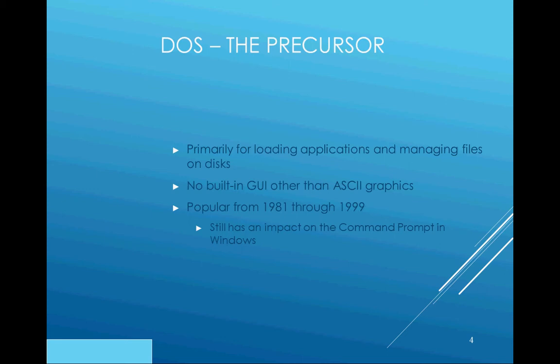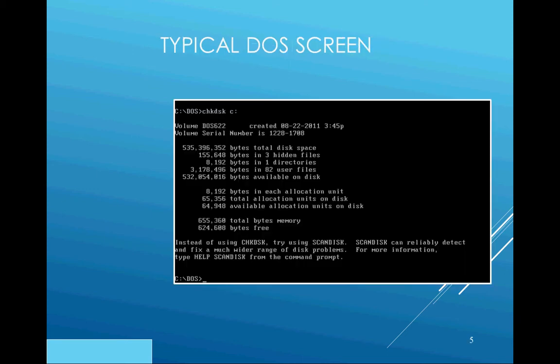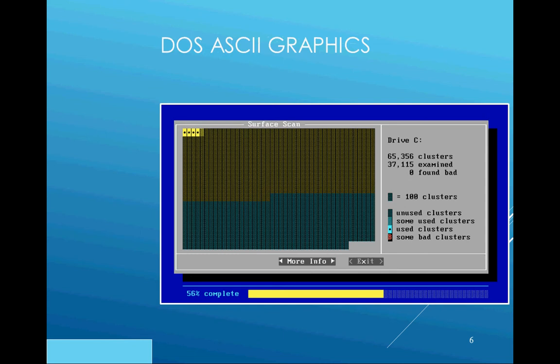Here's what the command prompt looked like in DOS. We can see the command prompt 'C:\DOS>' issuing a command to check disk space on the C drive, which checks the hard drive for errors. That same command issued with ASCII graphics looks a little different — a lot better there in terms of functionality and feedback.